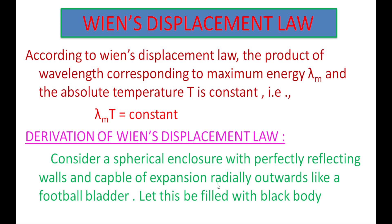What is Wien's Displacement Law? Already in the previous class we discussed about energy distribution in blackbody radiation. We saw how intensity of radiation and energy vary with wavelength and temperature. From those experimental results, Wien's Displacement Law gives us: Lambda_M into T is equal to constant. The product of the wavelength corresponding to maximum energy and the absolute temperature T is constant.